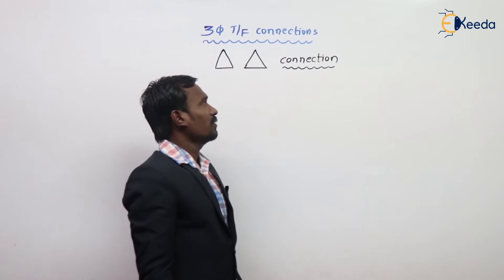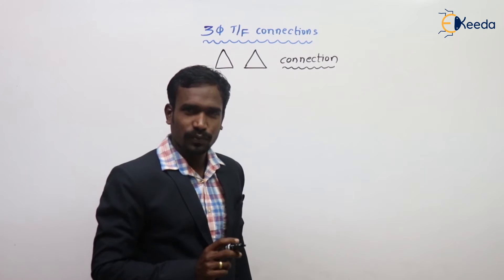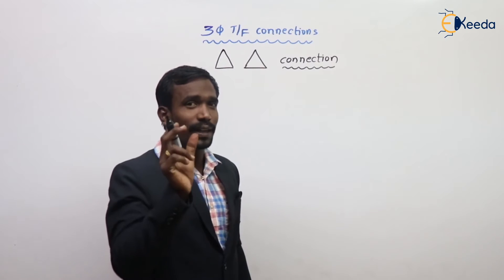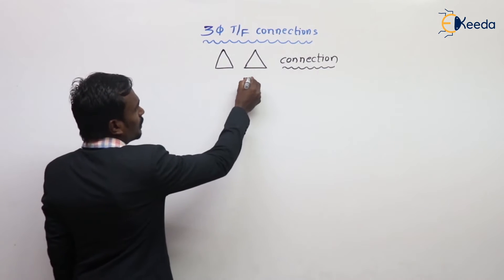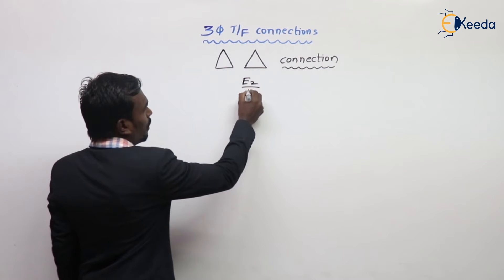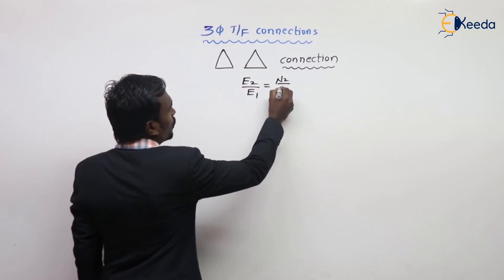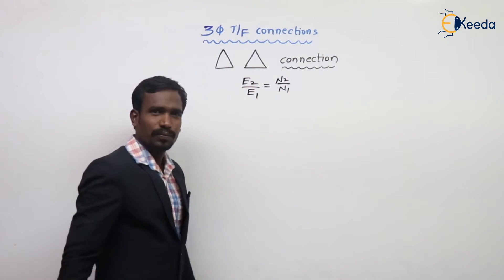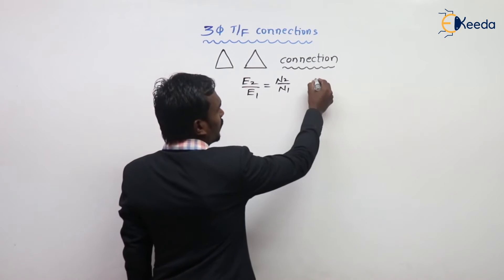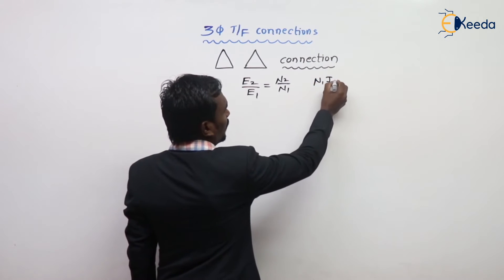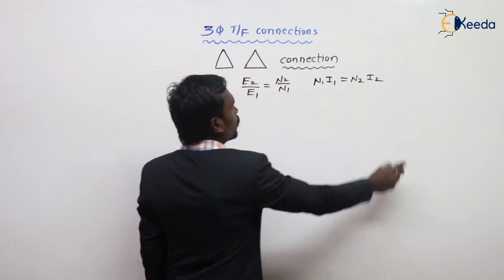First of all, we have to know the phase turns ratio and line turns ratio. Generally, we know that E2 upon E1 is exactly equal to N2 upon N1. And at balanced condition, N1 × I1 equals N2 × I2.